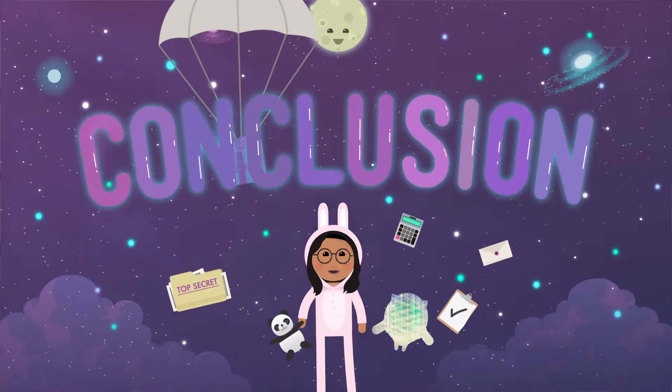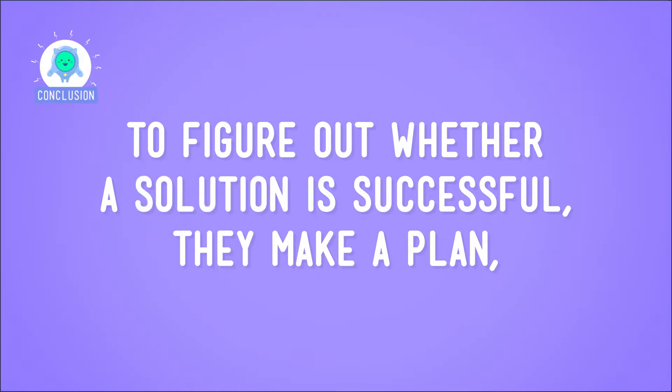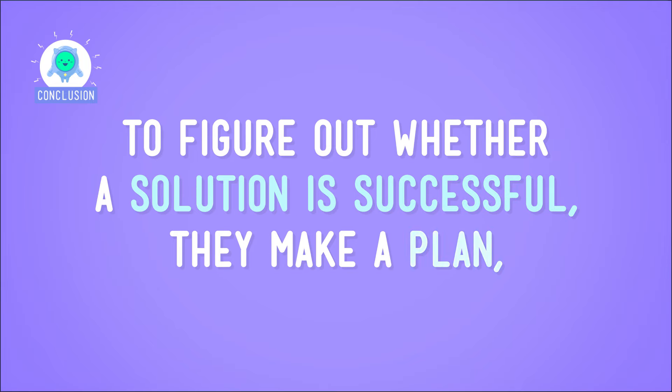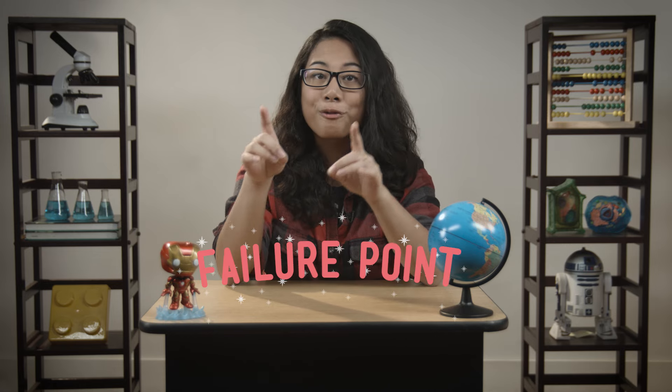Let's review the steps that engineers go through when trying to find and fix failure points. To figure out whether a solution is successful, they make a plan — an organized series of steps to accomplish their goal. Part of this plan includes isolating a variable and then changing that one variable in a series of trials or tests. And once their solution fails one of those trials, they've found a failure point. So if you actually plan to fail, then you're not really failing — you're making your solution better.